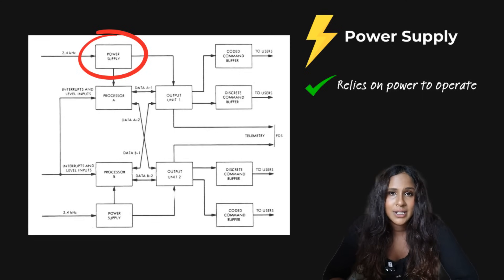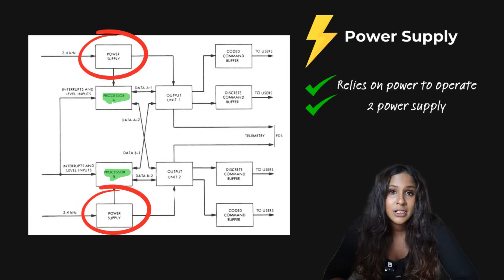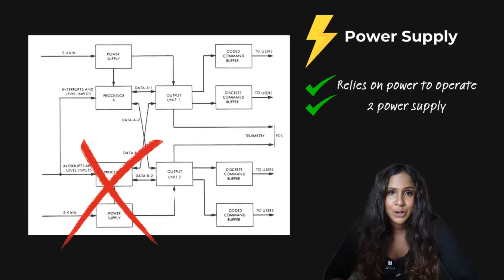The computer system obviously relies on a power supply to operate. And in the diagram, you can see two separate power supplies, one for each processor. The two separate power supplies just ensures redundancy, backup power. So if one fails, the other one can take over.